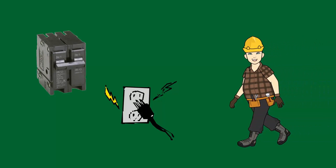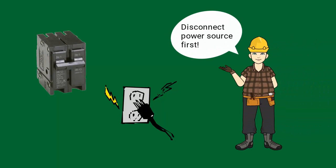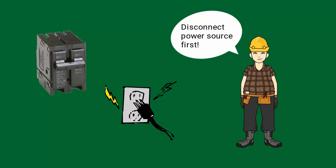If a person comes into contact with a live electrical conductor, do not touch the equipment, cord, or person. First, disconnect the power source from the circuit breaker or pull out the plug using non-conductive material such as a leather belt. Always disconnect the power first to prevent two casualties.